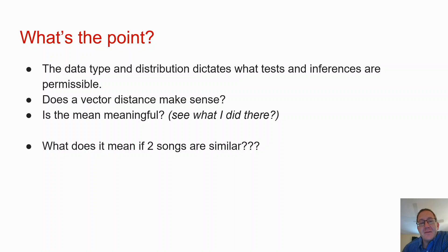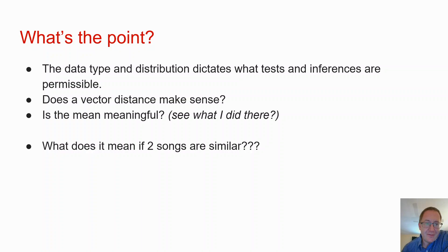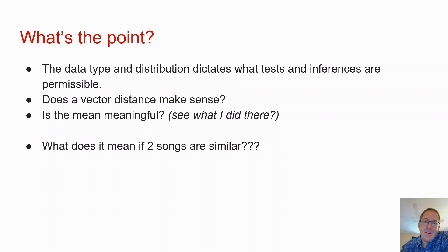What about a vector distance? Does that make sense if I have a non-normally distributed data set? If I have something that's not normally distributed, the ability to actually prove something statistically or provide evidence statistically that something is true becomes extremely difficult. This is something that comes up in data mining. For example, what do I mean if two songs are similar?